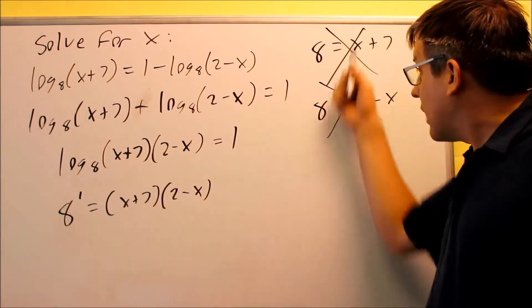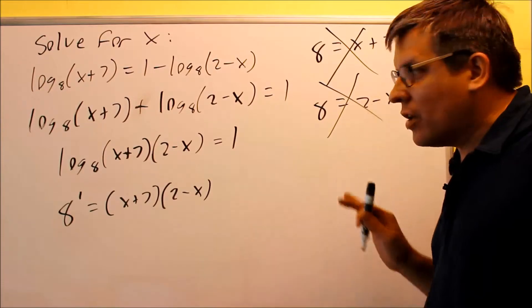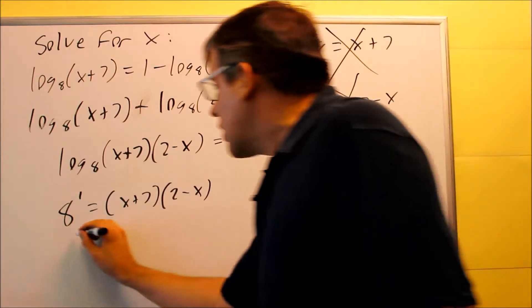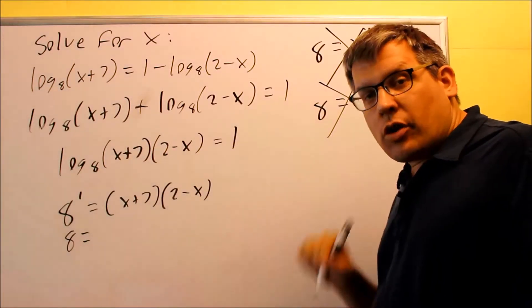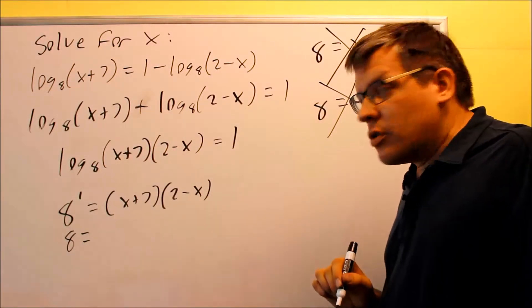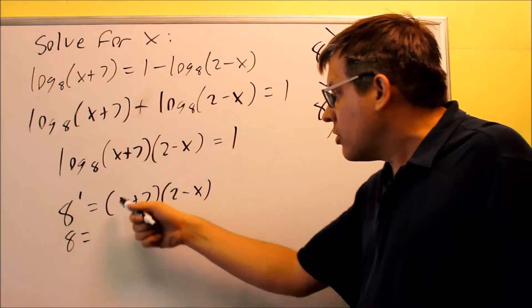So because you don't have a 0, you're not allowed to do that step. So don't do this method. Instead, you want to multiply this out, subtract the 8, get it equal to 0, and then we're going to factor it and set both terms equal to 0. That's the correct way of doing it. So we're going to do that on this one.